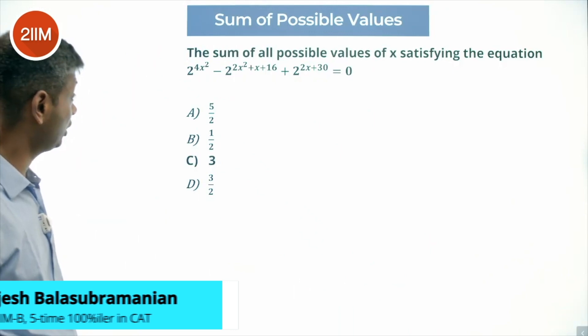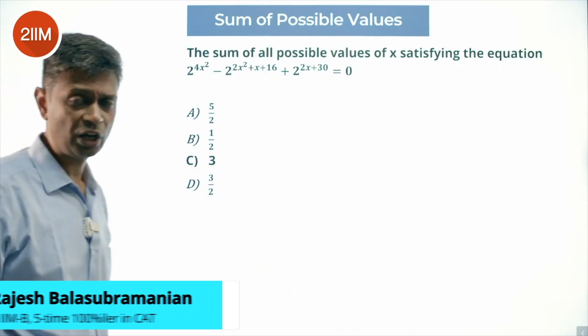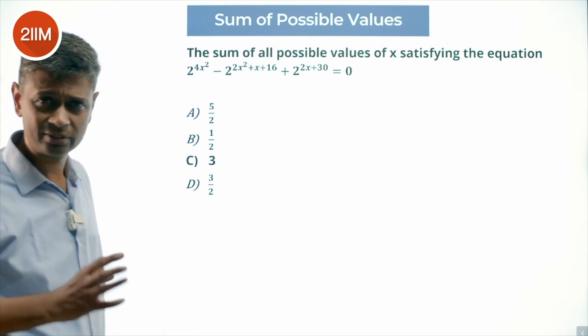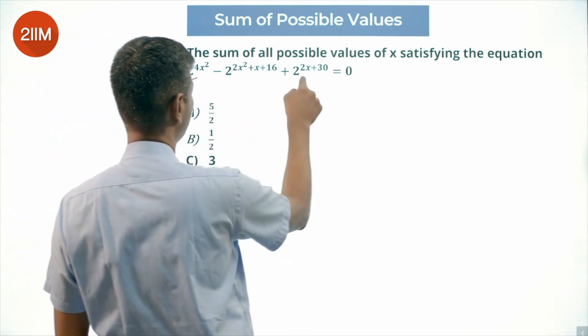The sum of all possible values of x satisfying the equation. I really struggled with this one. I thought I could split this, solve for a quadratic, so I multiplied these two.